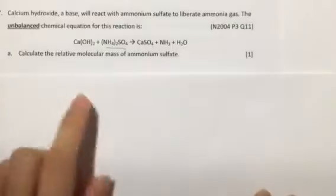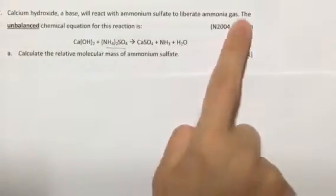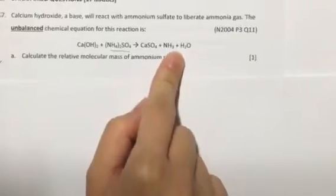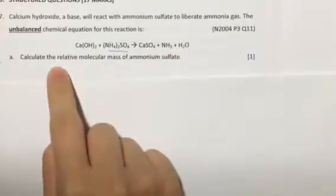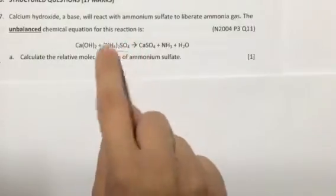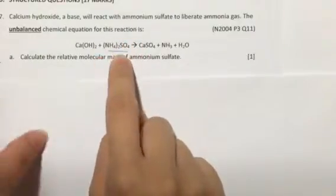The next question says that the unbalanced chemical reaction is this, which means you likely have to balance it later. They ask you to calculate the relative molecular mass of ammonium sulfate. So how do we do so?